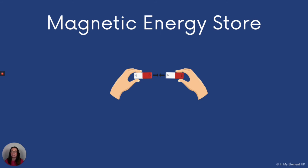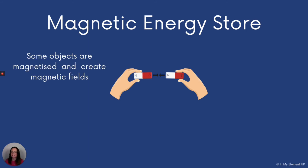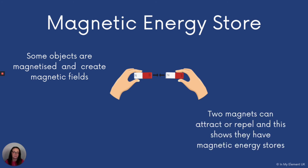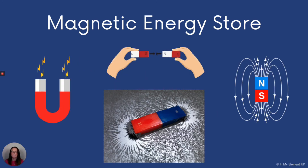Then we've got the magnetic energy store. In the magnetic energy store, we're looking at energy that can be found between two magnets — an object that's magnetised and can create a magnetic field. These two magnets can attract or repel one another, showing that they have magnetic energy stores. One image shows the magnetic field using iron filings around the magnet, and the other image on the right is a drawing to represent that. All of these magnets have a magnetic energy store.